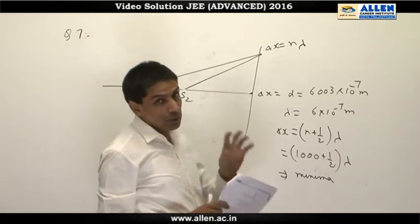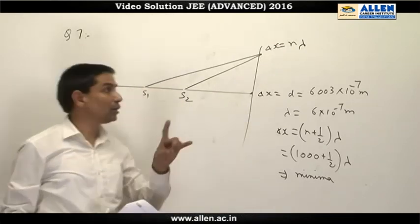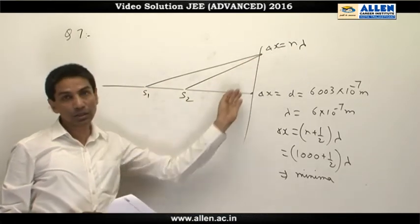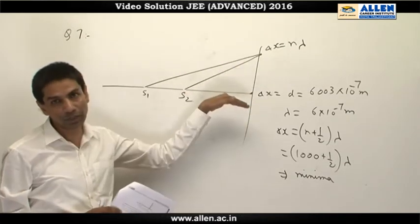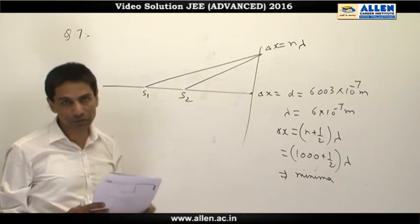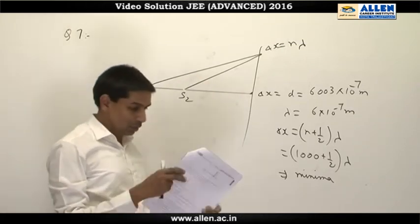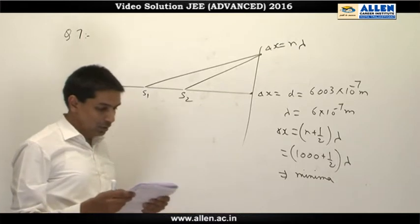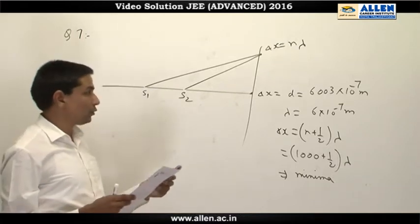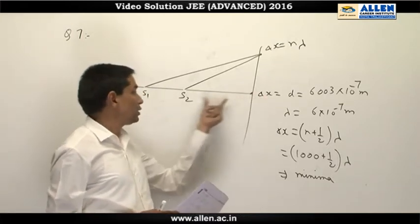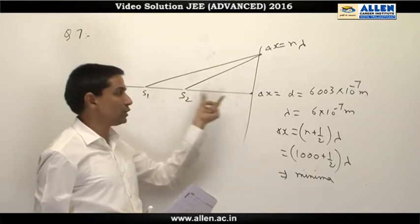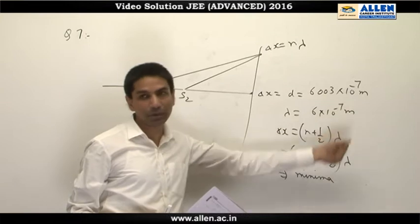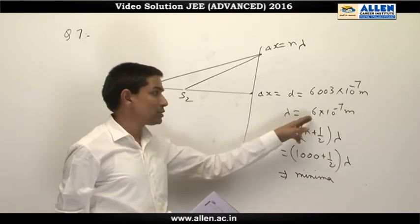The fringes where there is maxima are given by a circular arc. I would not say it is completely circular because only the upper part of the screen is visible, so we will get semicircular fringes. As far as option C is concerned, the region very close to point O, the path difference equals the distance d between slits S₁ and S₂. That comes out to be 6003 × 10⁻⁷ meters.